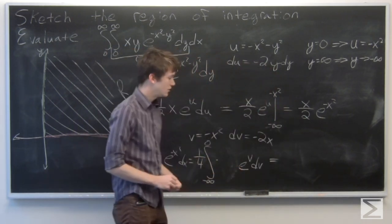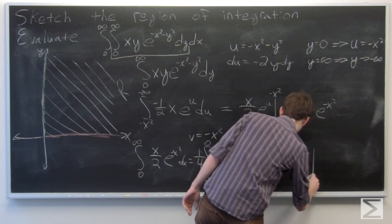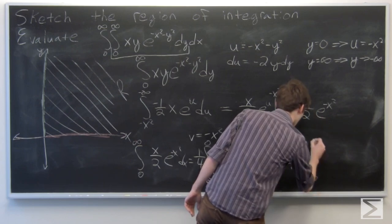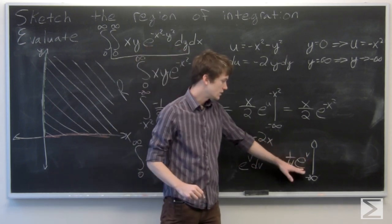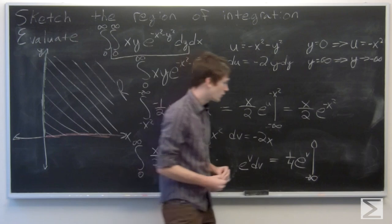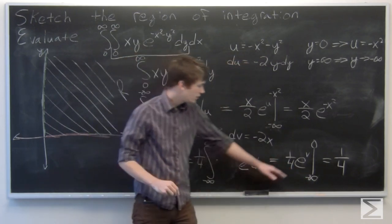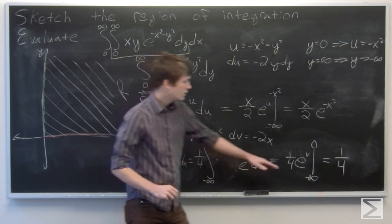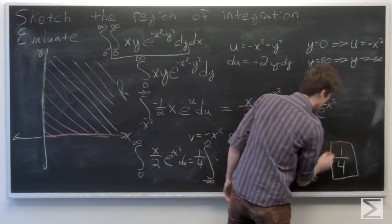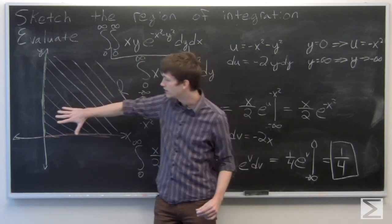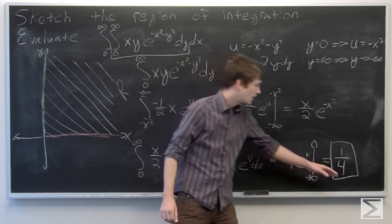The integral of e to the v dv is just e to the v. So we have one-fourth times e to the v evaluated from negative infinity to 0. When v equals 0, we get one-fourth times e to the 0, which is one-fourth. As v goes to negative infinity, e to the negative infinity goes to 0, so the second term disappears. We sketched our region of integration as the first quadrant of R2, and evaluated our iterated integral to get 1/4.